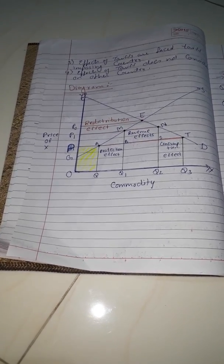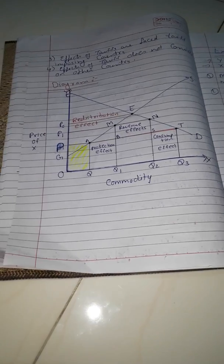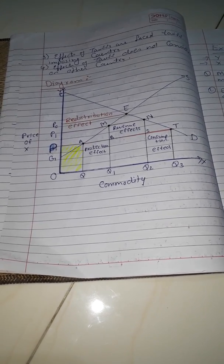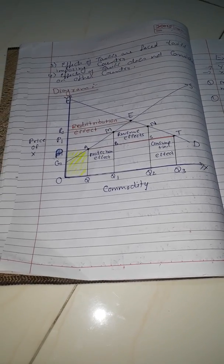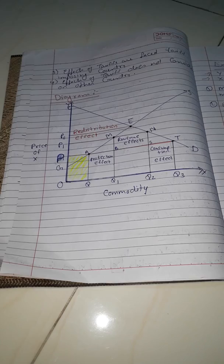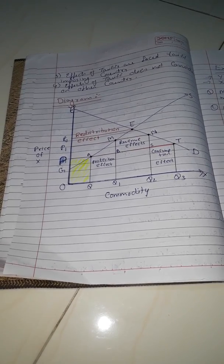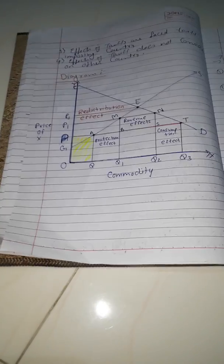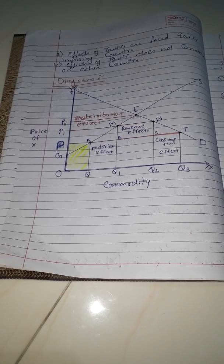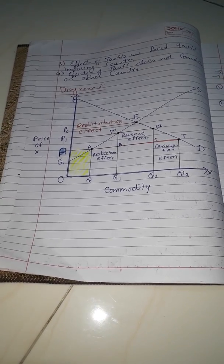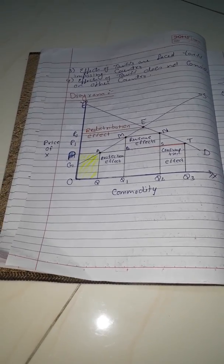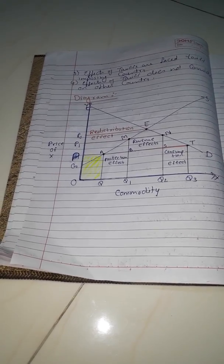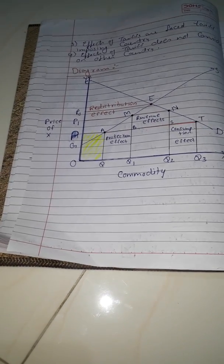Next, we will find out the equilibrium price of the product. Whenever we want to find the equilibrium price, we need to find the point where the demand curve and supply curve intersect. In this diagram, at point E, demand curve CD and supply curve GS both intersect, so our equilibrium point is E and our equilibrium price is OP0.